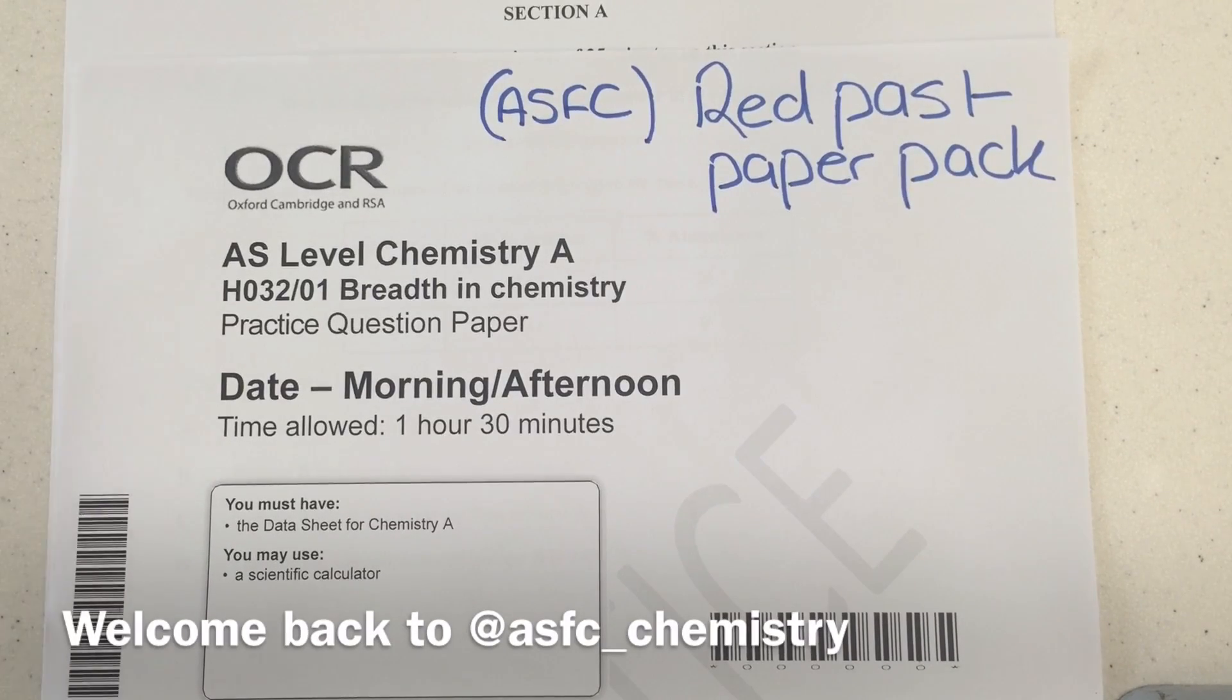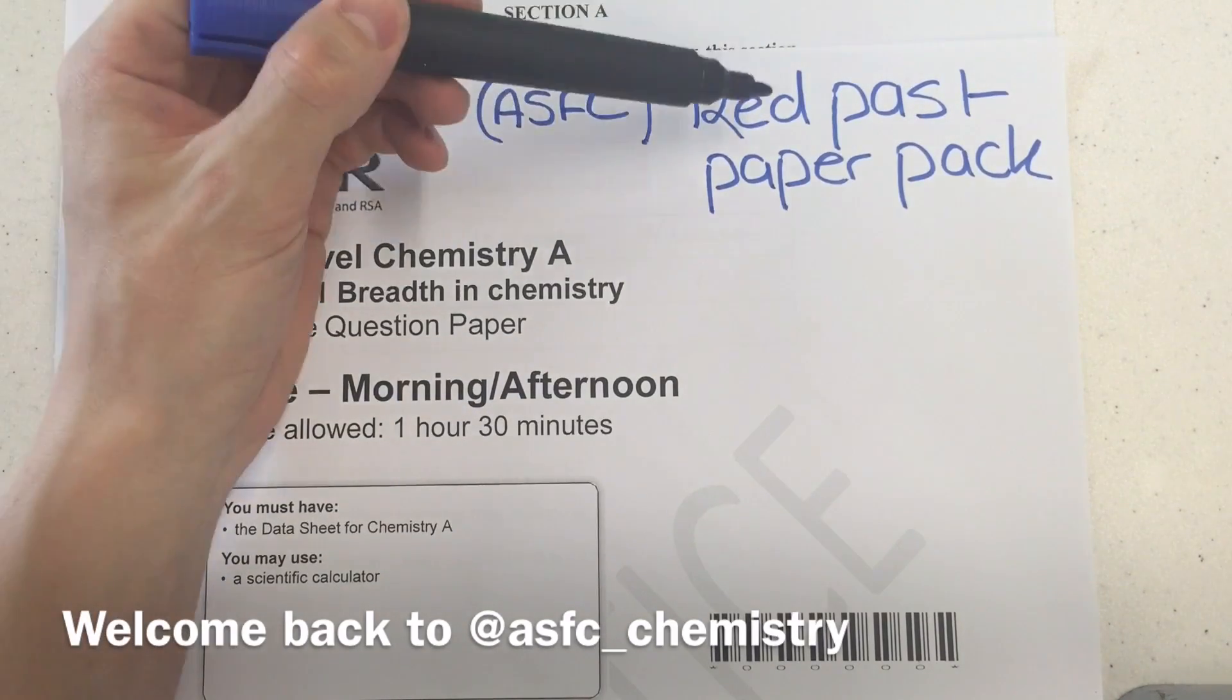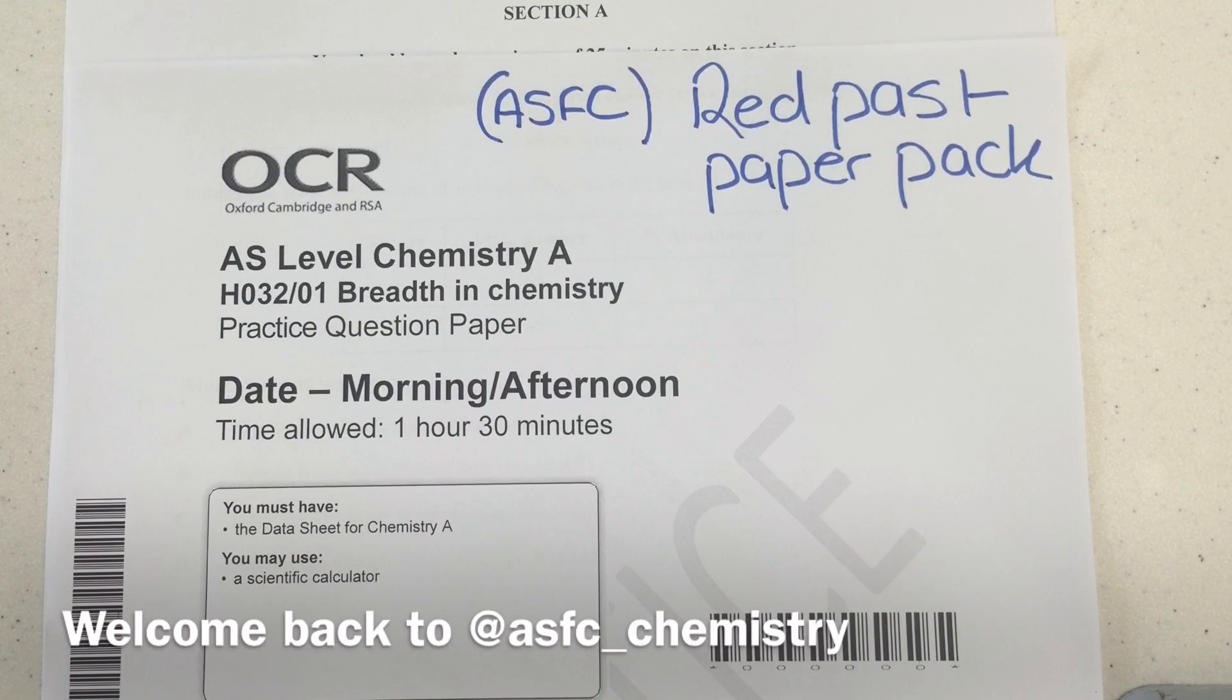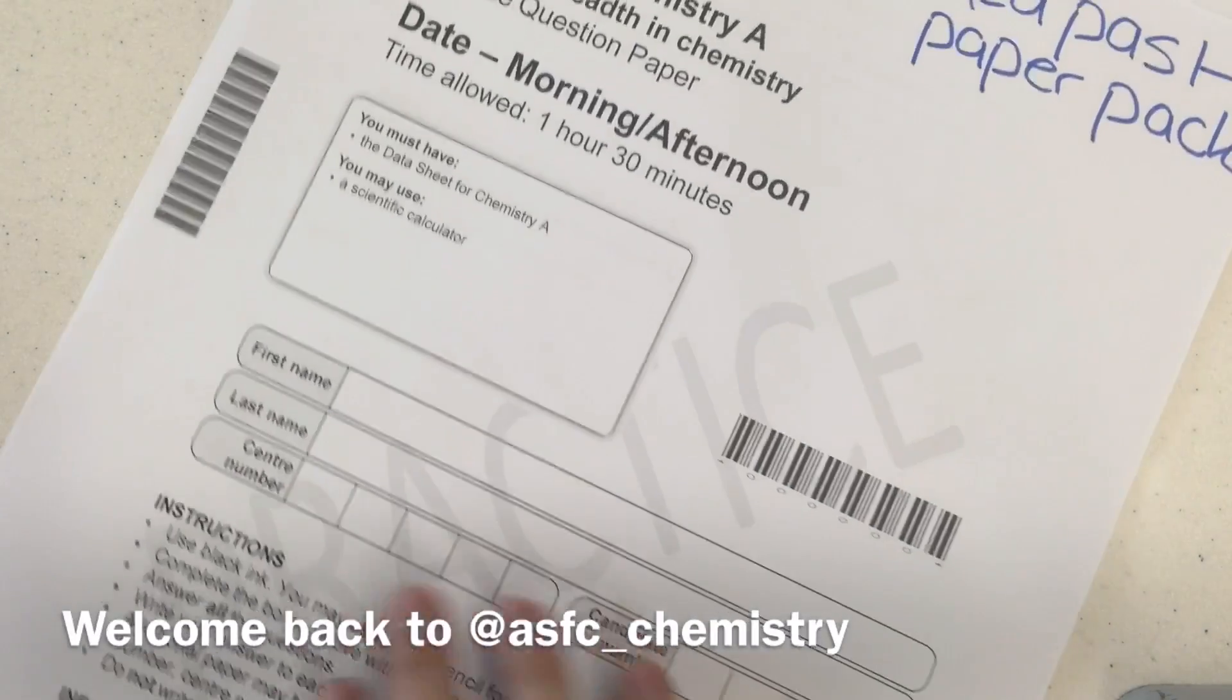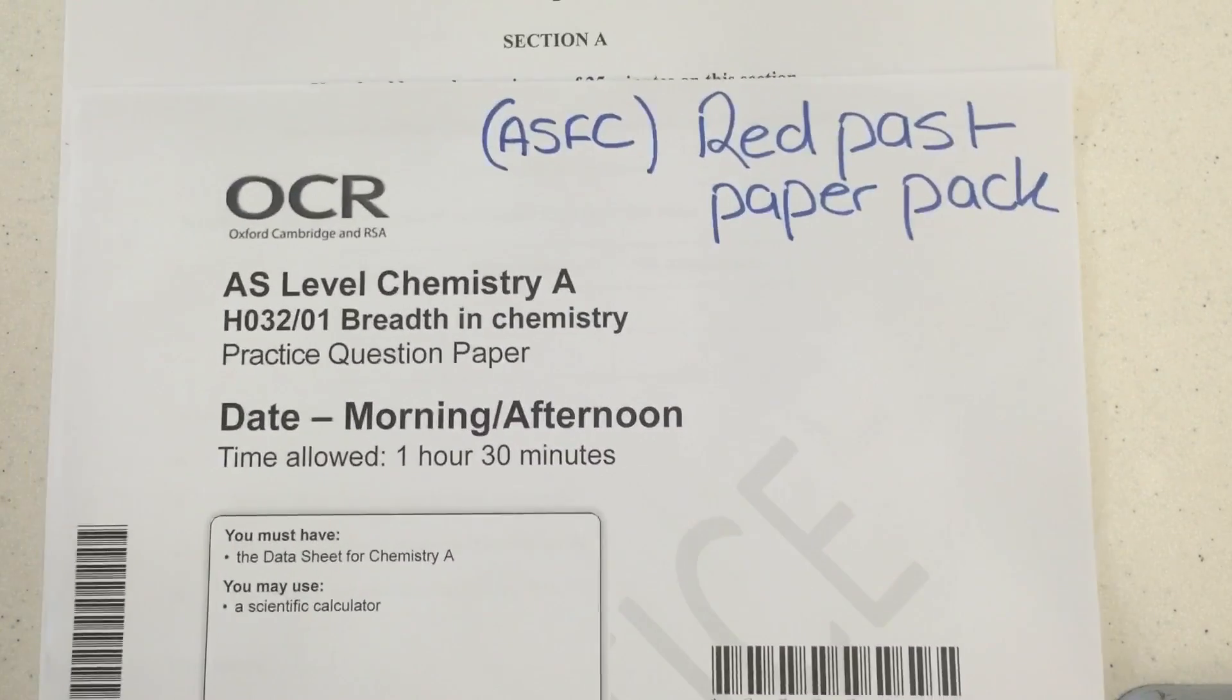Okay everyone, what I'm going to go through is the breadth in chemistry multi-choice questions. This is from Ashton Sixth Form College in the red past paper pack. It's in the same pack that has all the January to April or May content in there. This is the one that has practice written across it, compared to the other one which has specimen across it.